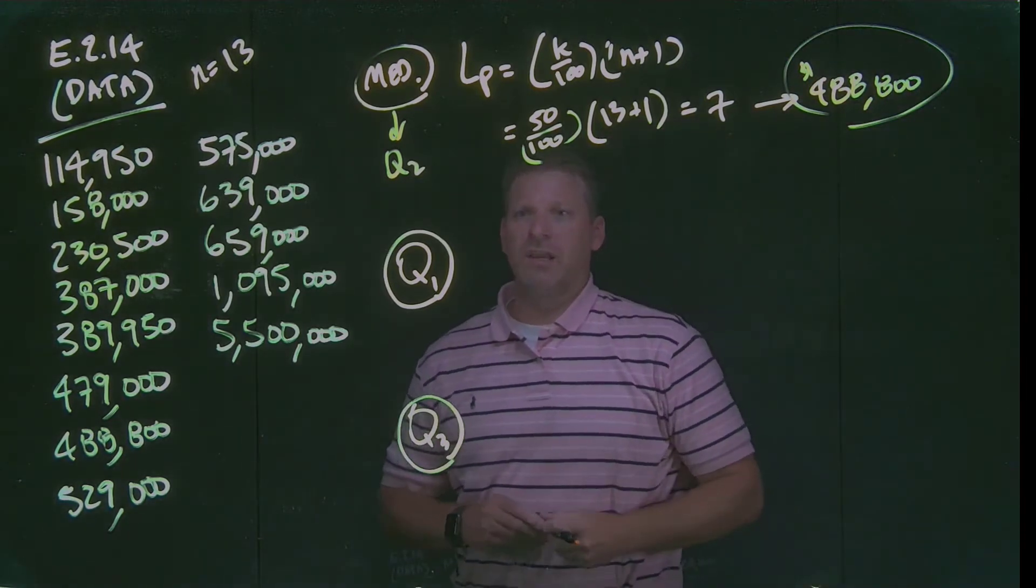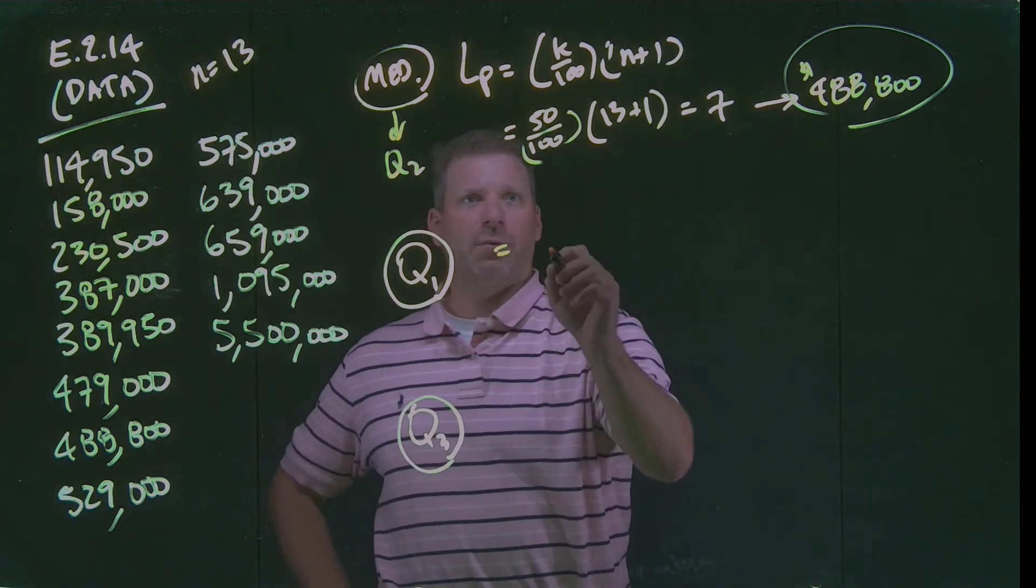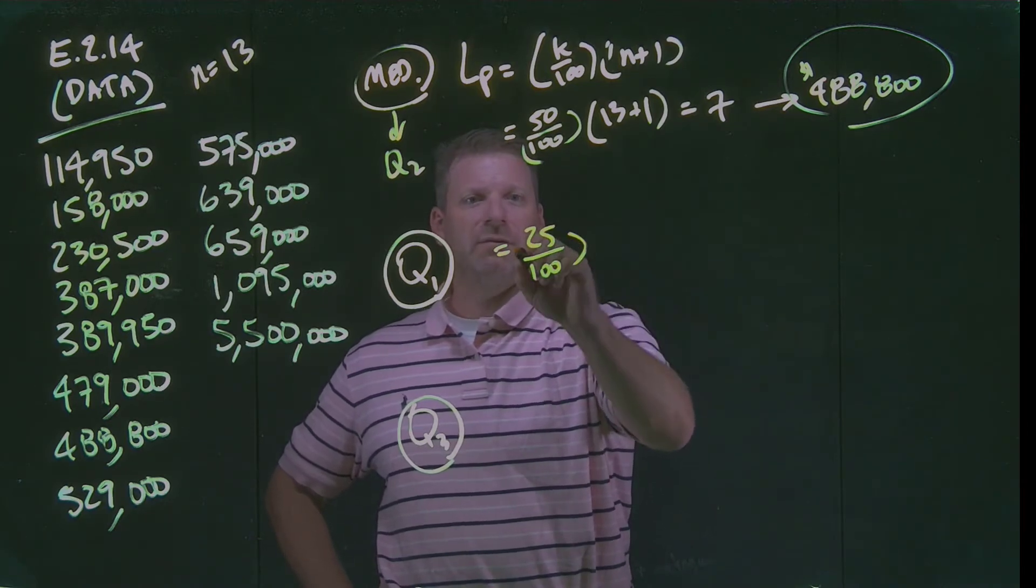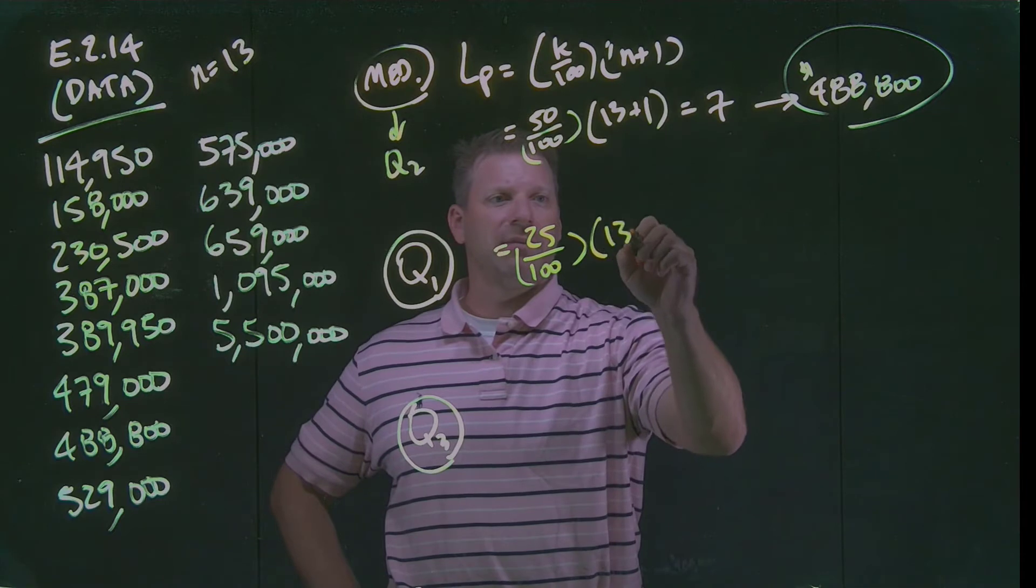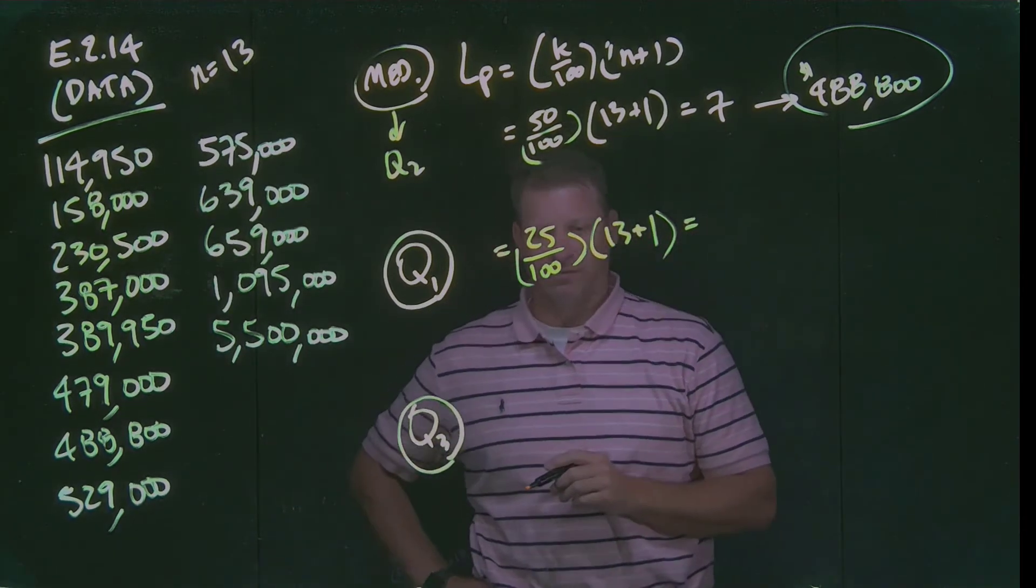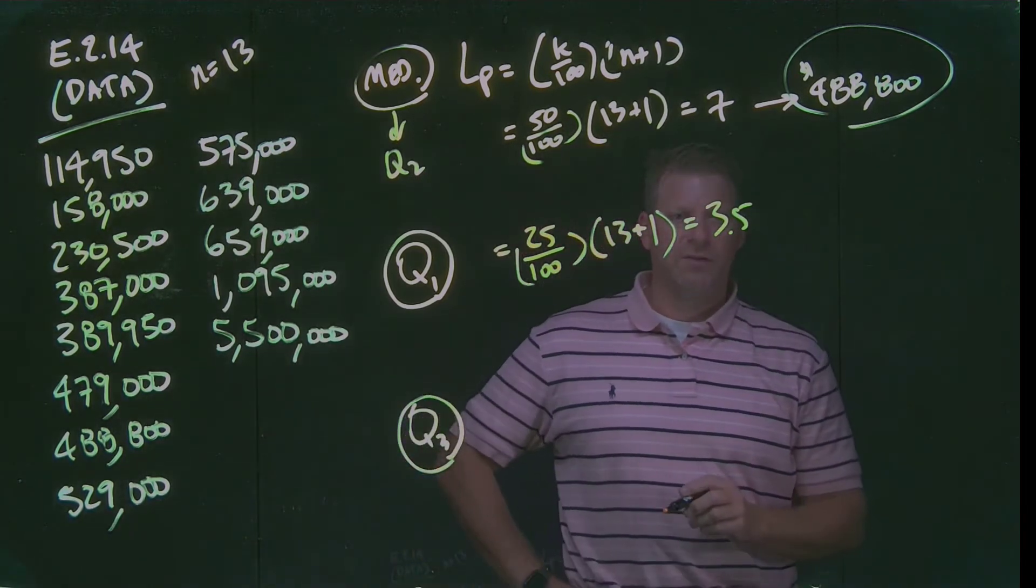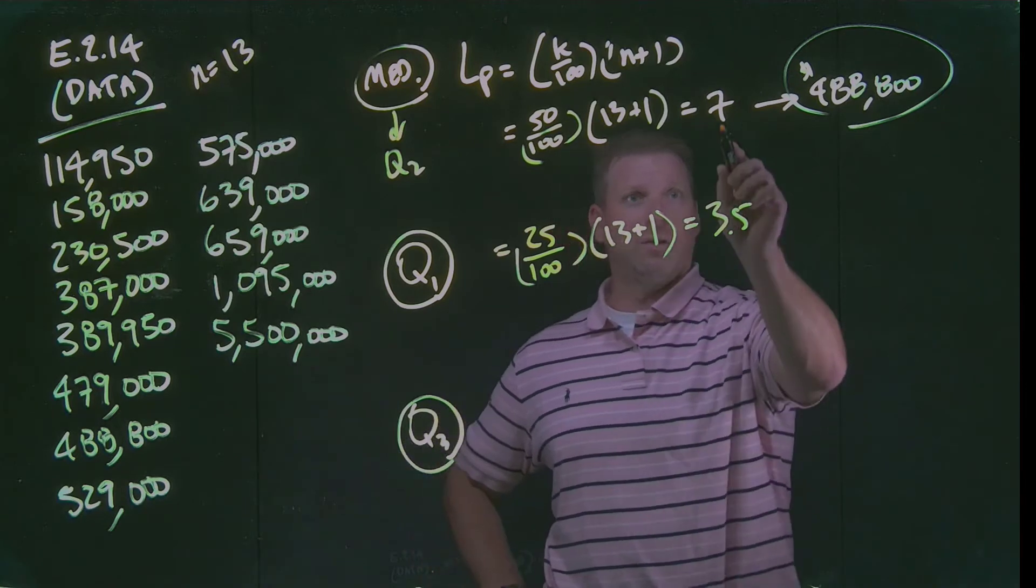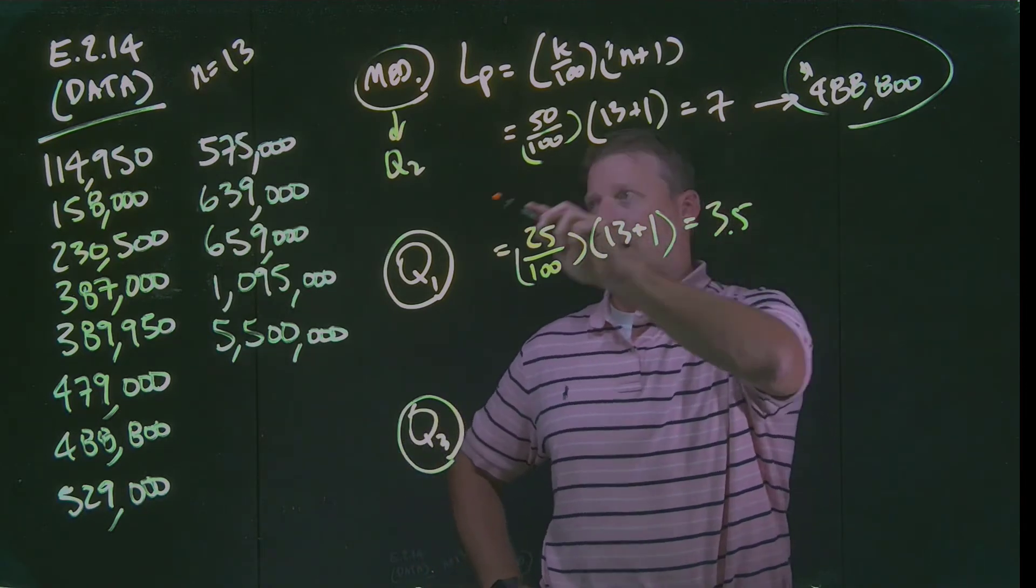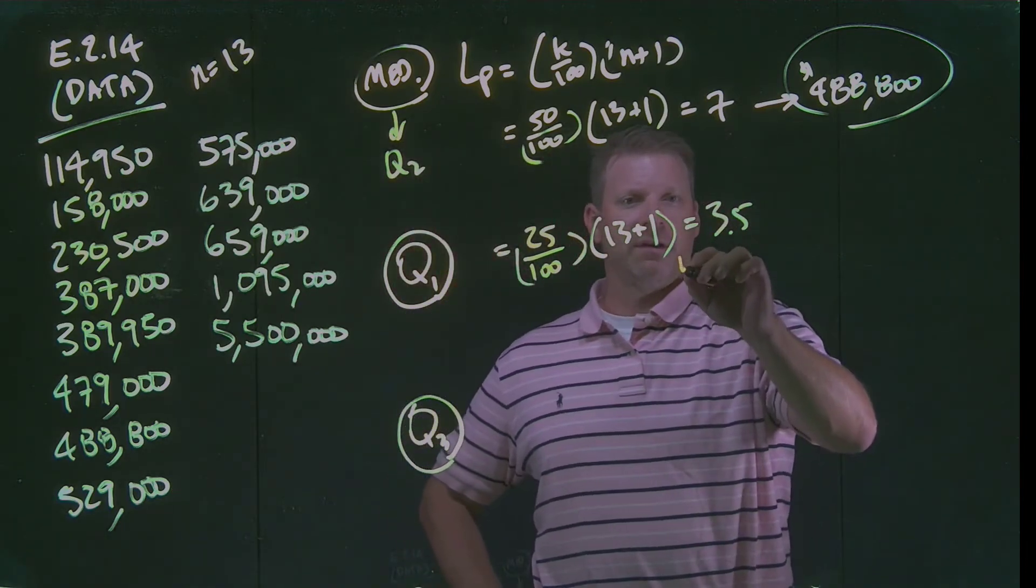We can use the same formula to find the location of our first quartile value. So now our first quartile value lines up to the 25th percentile. We've got 25 divided by 100 times 13 plus 1. If we do that math, 0.25 times 14, we come up at 3.5. Now this presents a unique issue for us because when we looked at our data point up here before to find our median, we landed right on the 7th value. Now what we've got to do is we've got to treat this number in kind of a weird way.